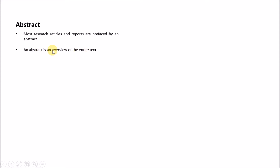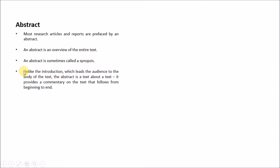An abstract is an overview of the entire text — this is very important. An abstract is sometimes called a synopsis. Unlike the introduction, which leads the audience to the body of the text, the abstract is a text about a text. That means it provides a commentary of the text that follows, from beginning to end.